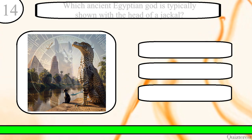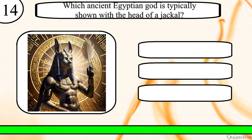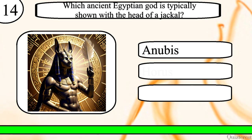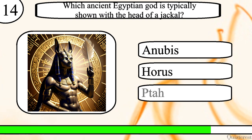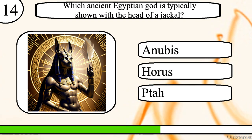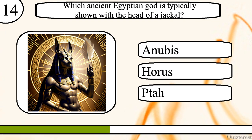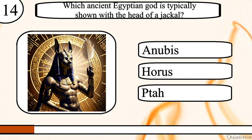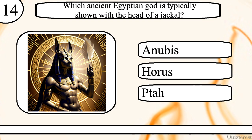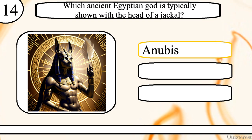Question 14. Which ancient Egyptian god is typically shown with the head of a jackal? Anubis, Horus or Tar? The correct answer is Anubis.